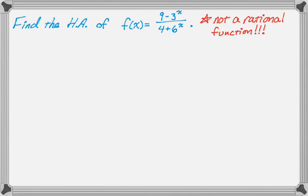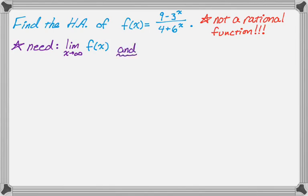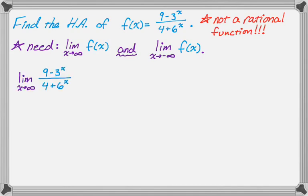What we really need to do on this problem is look at the limit as x approaches infinity of this function. But because it could have two different horizontal asymptotes, we also need to look at the limit as x approaches negative infinity of f(x). We're going to look at both of those, and if they don't give the same result, there could be two horizontal asymptotes — unless we get infinity or negative infinity.